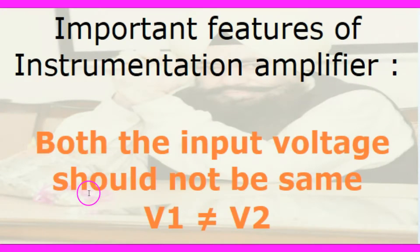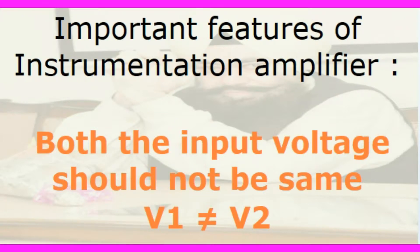Input voltages V1 and V2 should not be equal at the two inputs of the instrumentation amplifier. Otherwise the instrumentation amplifier will give zero output. So there should be some difference between V1 and V2. This is a very important point.